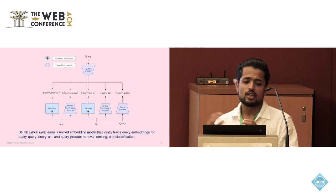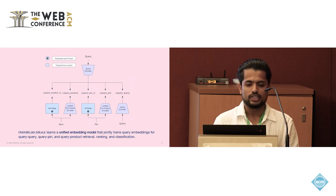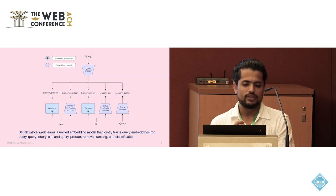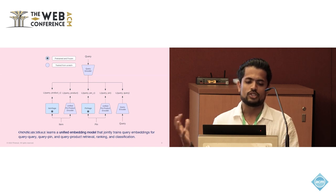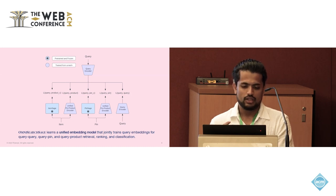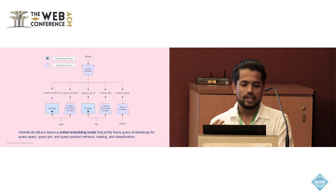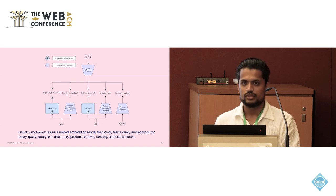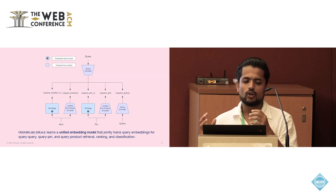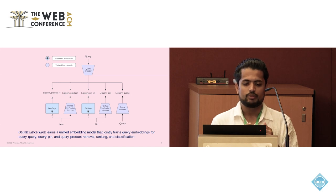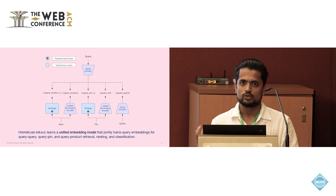Training separate two-tower models for each content type and representation proves to be resource intensive and inefficient. To address this, we introduce OmniSearch Sage, which offers a unified query embedding model that jointly trains embeddings for query-query, query-pin, and query-product retrieval, ranking, and classification. In addition, we also train the query embeddings to be compatible with existing entity embeddings, which allows for very easy adoption in various downstream models.